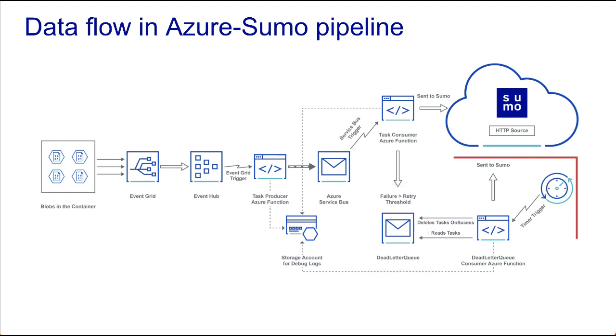Another Azure function named DLQ Task Consumer is triggered every 5 minutes by a timer to retry sending the messages.